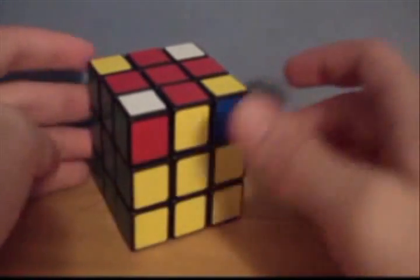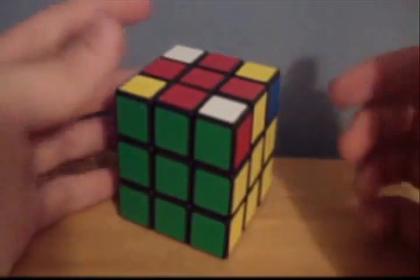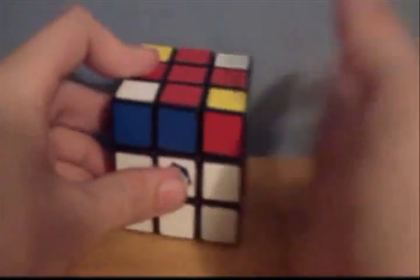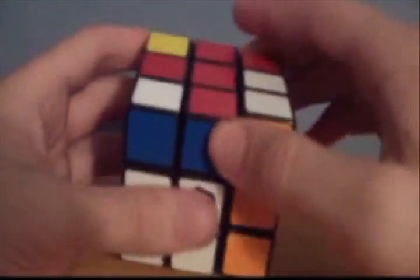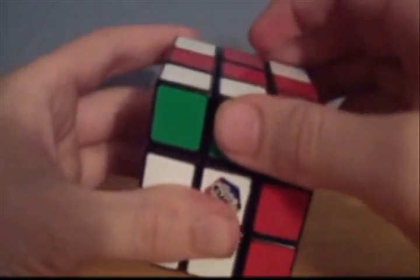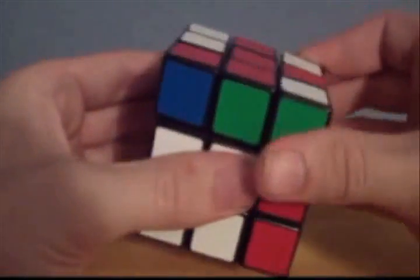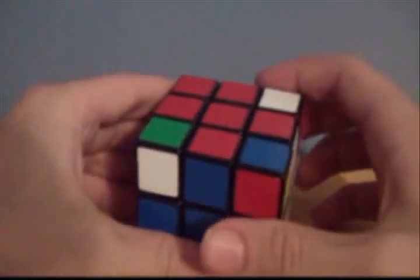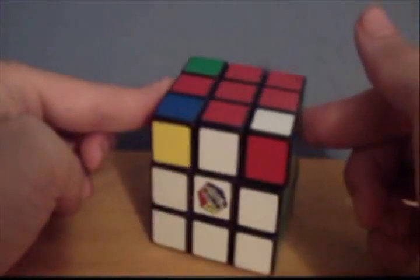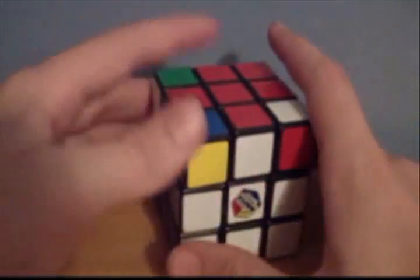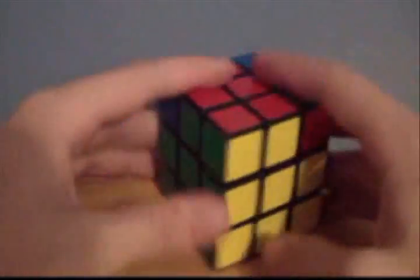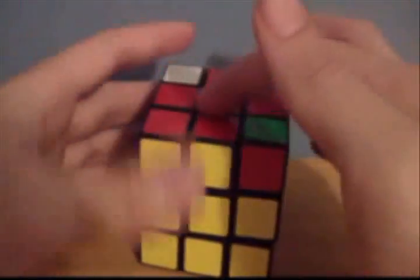What you're going to have is probably two sides next to each other that match up with the cross. What you're going to do is have one side facing to the right, and you're going to do right, up, right inverted, up, right, up, up, right inverted, and then one last up. And that should line everything up. If you have it on both sides, you're going to do just that same thing, but to get the two sides next to each other, and then you'll just do it one more time, and you'll get this.